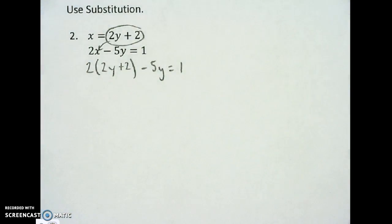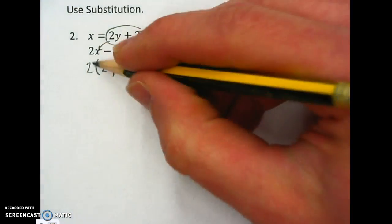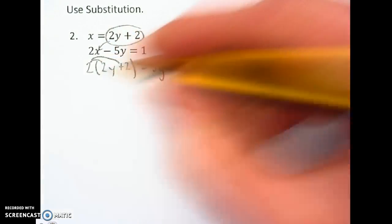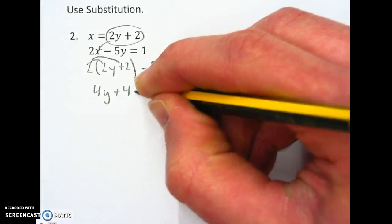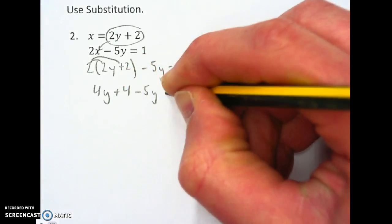Now I can solve this down and get my y value. First thing I want to do is do the distributive property. So I'll have 4y plus 4 minus 5y equals 1.